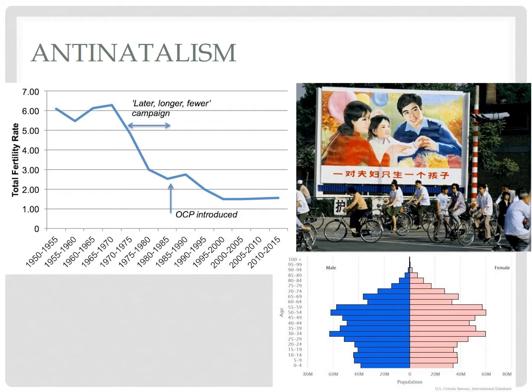But perhaps the most well-known and certainly the most asked about policy on the AP exam is the one-couple-one-child mandate in China, commonly referred to as the one-child policy. This policy was in effect from 1980 to 2015. So let's understand the social, economic, and political history that led up to the one-child policy.